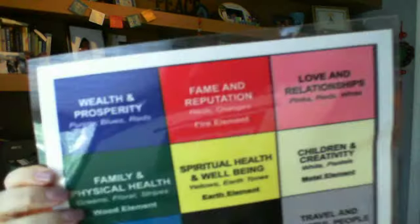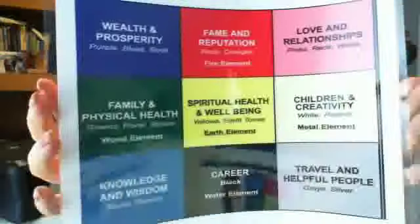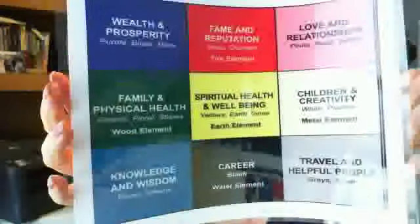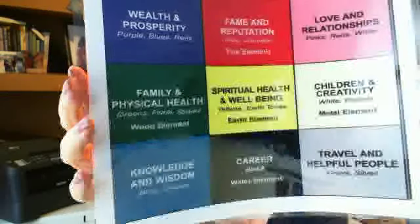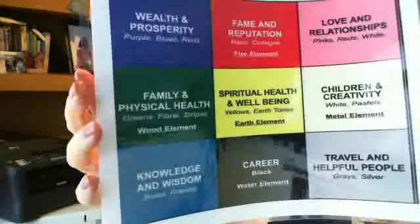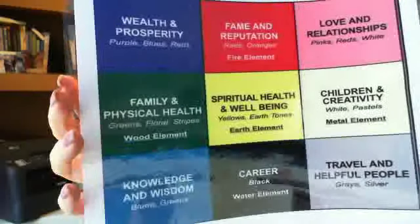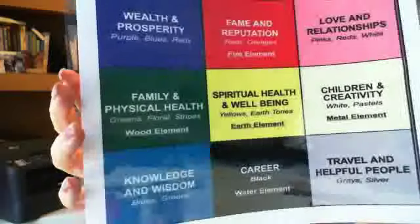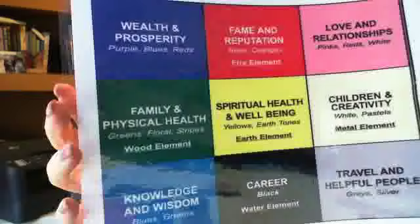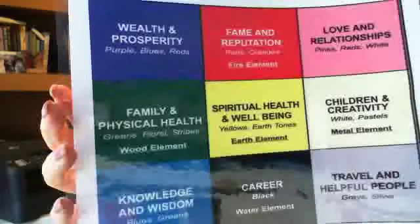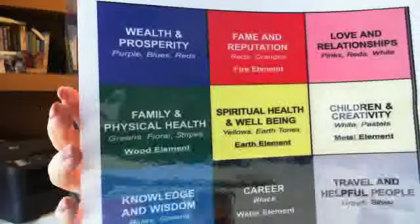Looking at the diagram more clearly: down at the lower third, wisdom is in blue, career is in black, and helpful people is in gray. Your main door will always be aligned with that lower third. You can have a center door, a door aligned to the left, or a door aligned to the right. Entering a space, the upper left-hand corner will always be wealth or abundance, and the upper right-hand corner will always be relationships.